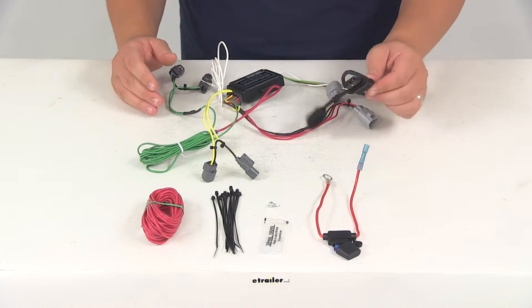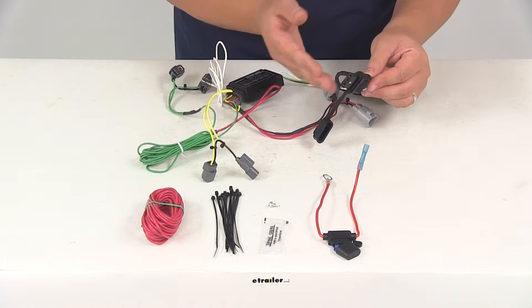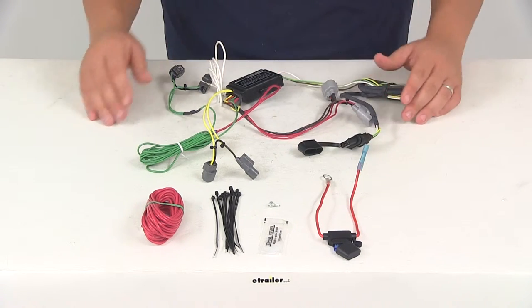Now this unit's going to provide your four-way flat trailer connector at the back of your vehicle. That's going to power your trailer signal lights. It is compatible with five-pole, six-pole, and seven-pole adapters. If you do need an adapter, it is going to be sold separately.